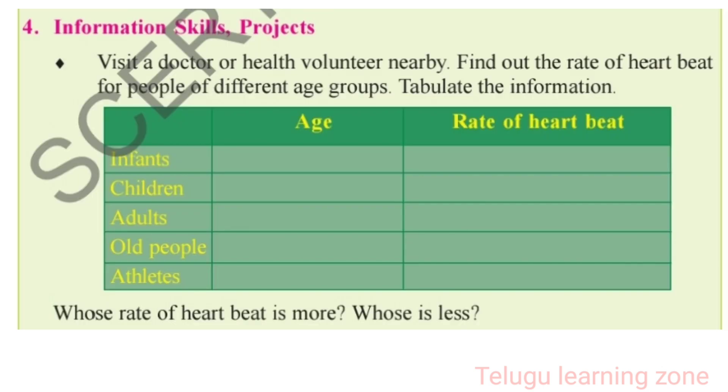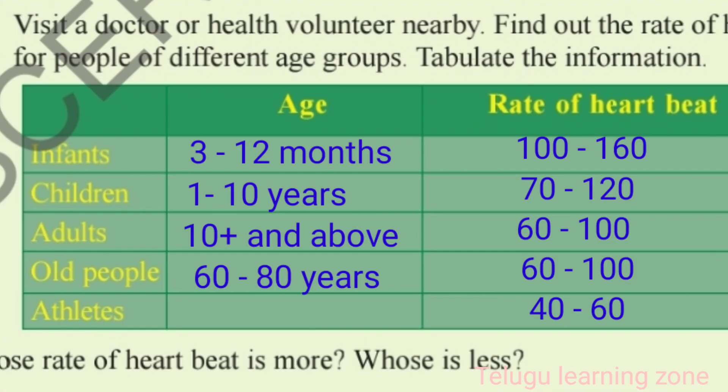Visit a doctor or health volunteer nearby and find out the rate of heartbeat for people of different age groups. Tabulate the information. For infants of age 3 to 12 months, rate of heartbeat is 100 to 160. For children of age 1 to 10 years, heart rate is 70 to 120. For adults of age 10 and above, heart rate is 60 to 100. Old people of 60 to 80 years have a heart rate of 60 to 100. For athletes, rate of heartbeat is 40 to 60.